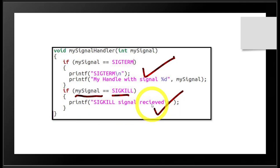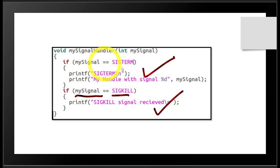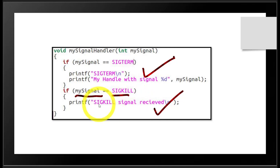We will run the program and see: in the case of SIGTERM, do those lines appear? If they appear, it means the signal was caught and the program came to that point. In the case of SIGKILL, we will see whether that line appears. If it appears, it was caught. If the line does not appear, that means SIGKILL was not caught, and we'll confirm that in the output.